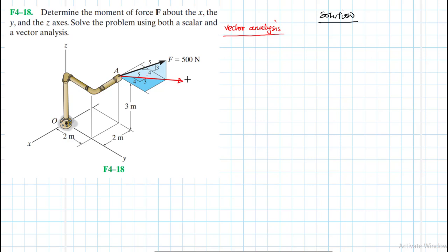So this force therefore is going to be equal to 500 times the slope. The slope is in the horizontal direction — we are mapping it like this. So it's 500 times 4 divided by 5, where 4 is the run and 5 is the hypotenuse. We just take the direction.